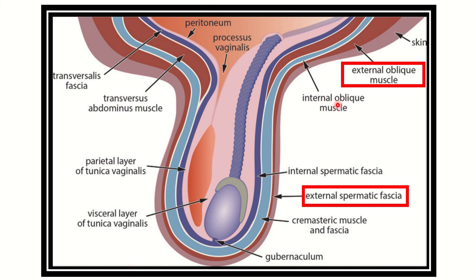And we can see after the skin, the first structure is the external oblique muscle. So: skin, external oblique muscle, internal oblique muscle, transversus abdominis muscle, parietal layer of the tunica vaginalis, then visceral layer of the tunica vaginalis.